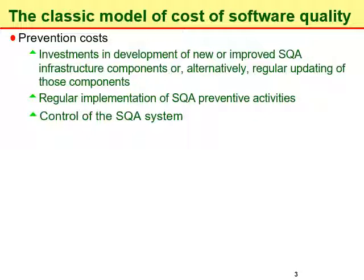Prevention costs also include instruction of employees in new and updated SQA subjects and procedures, costs related to certification of employees for positions requiring specific certification, and consultations on SQA issues. The third type of prevention cost is control of the SQA system through activities such as internal quality reviews, external quality audits by customers and SQA certification organizations, and management quality reviews.